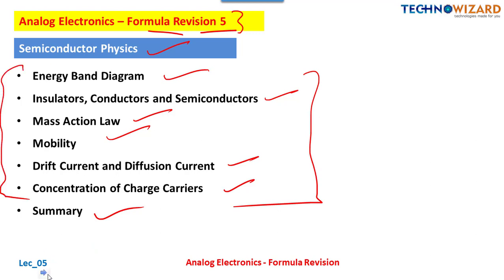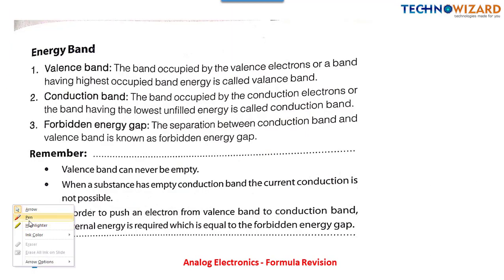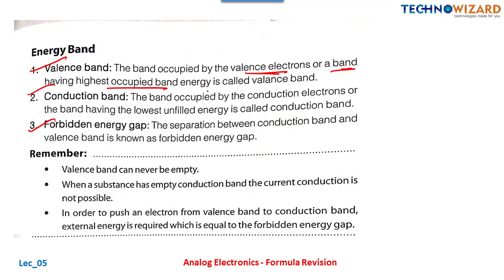Starting with energy bands — there are three types: the valence band, conduction band, and the forbidden energy gap. The valence band is the band occupied by valence electrons or the band having the highest occupied energy. The conduction band is the band with the lowest unfilled energy. The forbidden energy gap is the separation between the conduction band and the valence band. Remember: the valence band can never be empty.